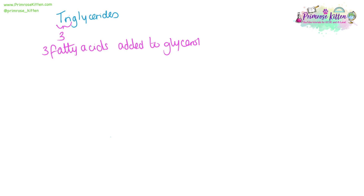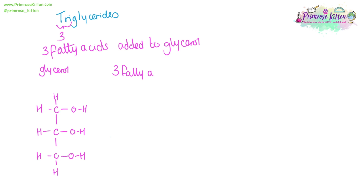A triglyceride is three fatty acids that have been added to glycerol. Glycerol is short with three carbons, and each carbon has an OH group coming off it. It is to these OH groups that the three fatty acids will be added. The end of a fatty acid that gets added to the glycerol has a carbon double bonded to an oxygen, and that carbon is also bonded to an OH group.